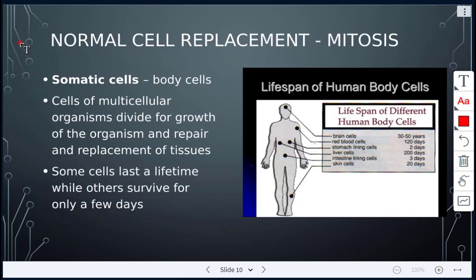Mitosis is for the body cells — it does not include the gametes. Somatic cells and body cells mean the same thing. Cells of multicellular organisms divide for growth of the organism and also for repair and replacement of tissues. So if you get a cut or an injury, it is mitosis that is taking place to repair those tissues.